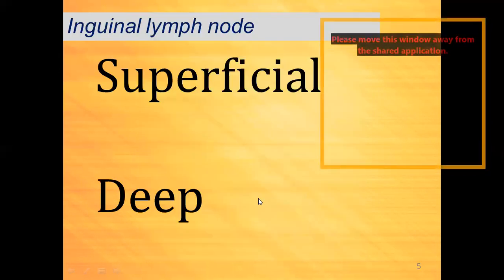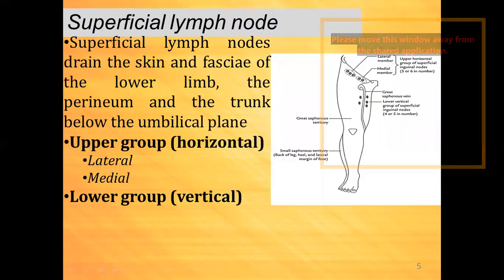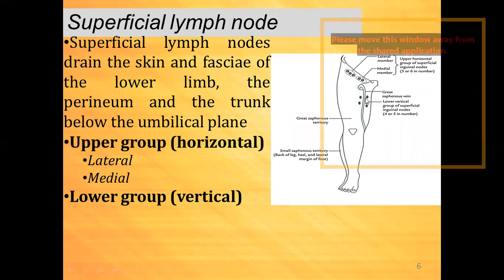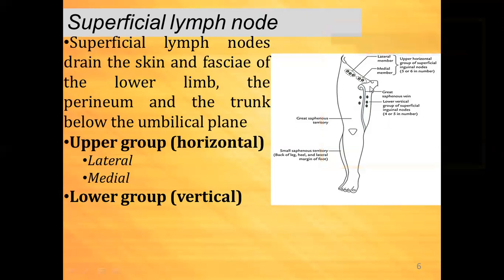In the lower limb, we can see two types of lymph nodes: one is superficial and another is deep. Superficial lymph nodes drain the skin and fascia of the lower limb, the perineum, and the trunk below the umbilical plane.